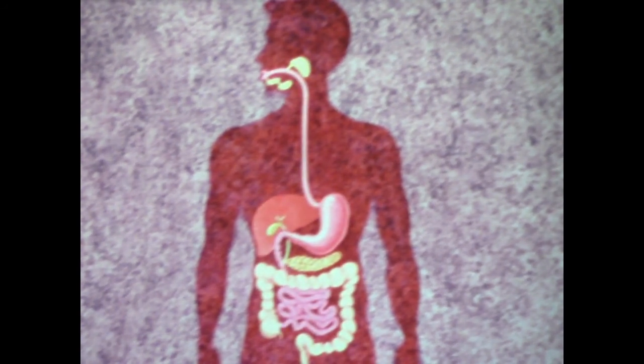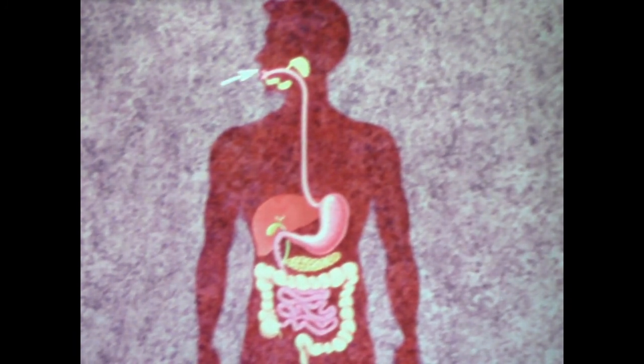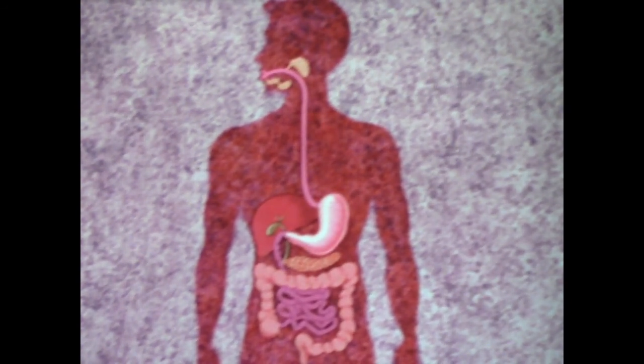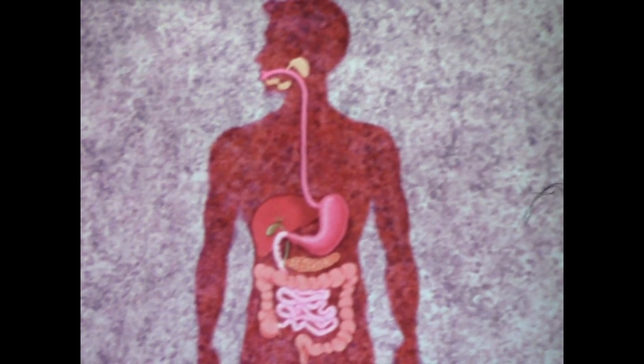In man, the complicated process of food breakdown or digestion is carried out by a regulated system of organs known as the digestive system. Parts of our digestive system include the mouth, the esophagus, the stomach, as well as the small and large intestines.